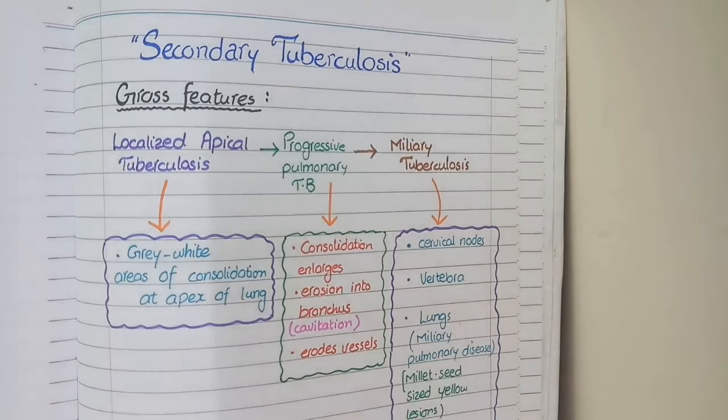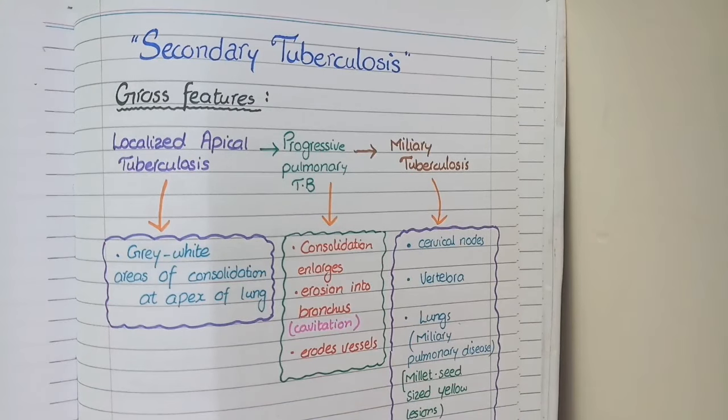Now the second category of tuberculosis is secondary tuberculosis which occurs in cases of reinfection or reactivation of a latent infection. Basically secondary tuberculosis occurs in one of three forms.